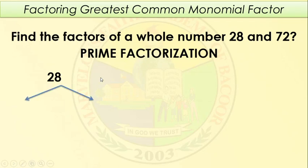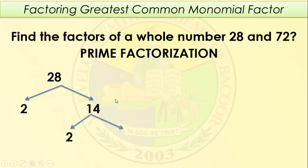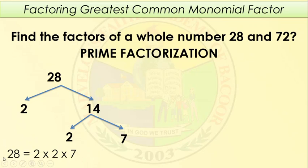So what is the factor of 28? The factor of 28 is 2 times 14. You can also use 4 times 7. But notice that 14 is not a prime number — it is a composite number. So we need to get the prime factor of 14, which is 2 times 7. Therefore, the prime factorization of 28 is 2 times 2 times 7, and the product of that is 28.